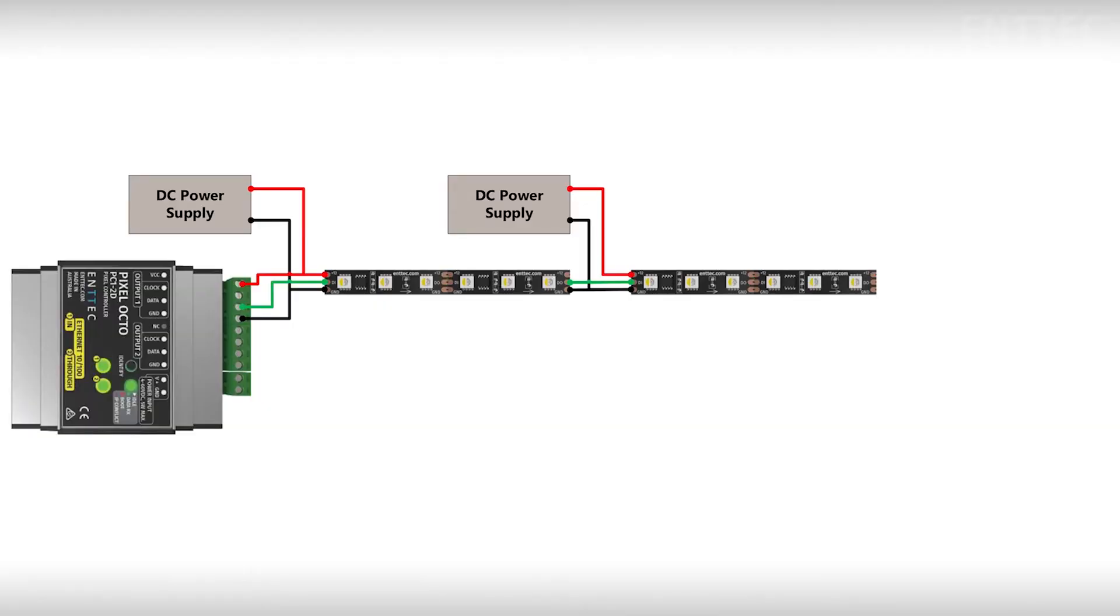Remember that the Octo is capable of driving four universes of pixels from each output. This translates to 682 RGB pixels in 8-bit mode.